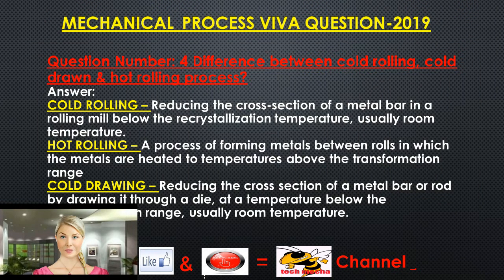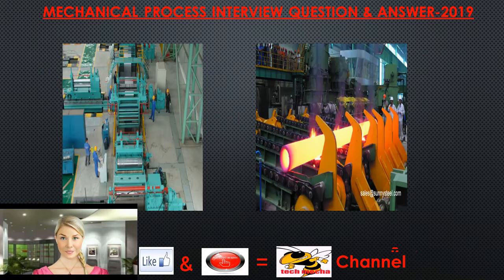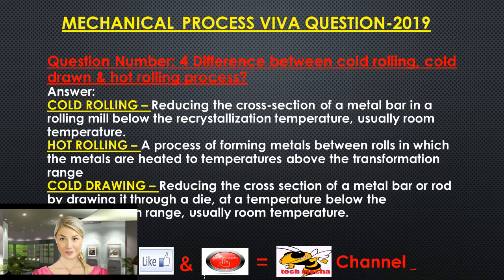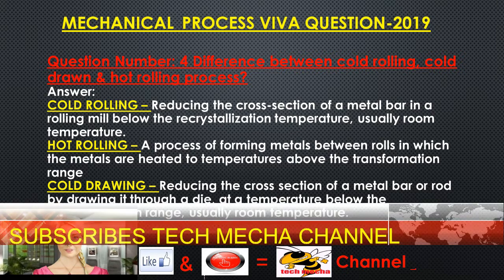Question 4: What is the difference between cold rolling, cold drawn, and hot rolling process? Cold rolling reduces the cross-section of a metal bar in a rolling mill below the recrystallization temperature, usually room temperature. Hot rolling is a process of forming metals between rolls in which the metals are heated to temperatures above the transformation range. Cold drawing reduces the cross-section of a metal bar or rod by drawing it through a die at a temperature below the recrystallization range.